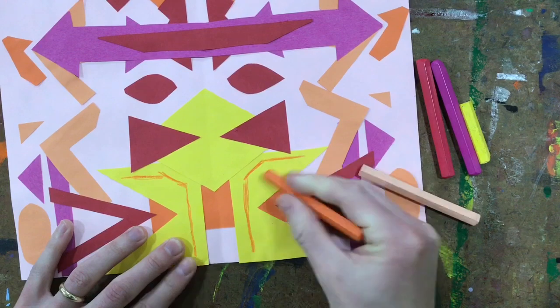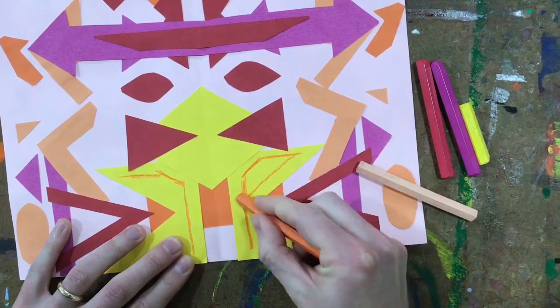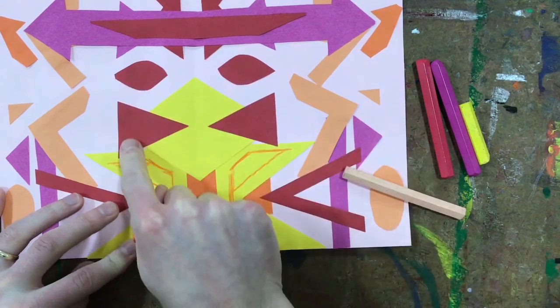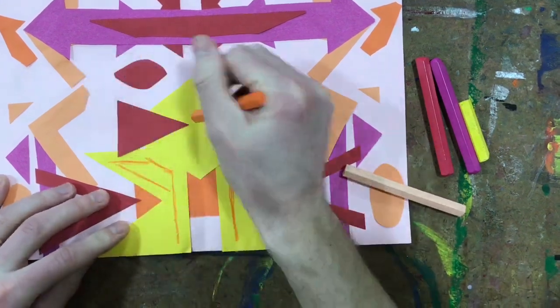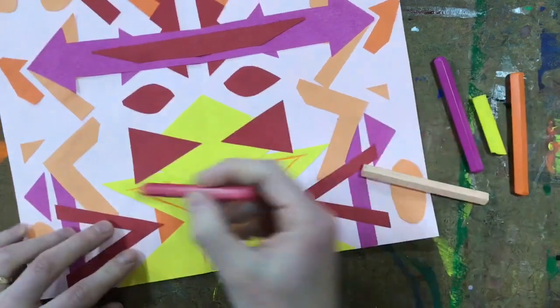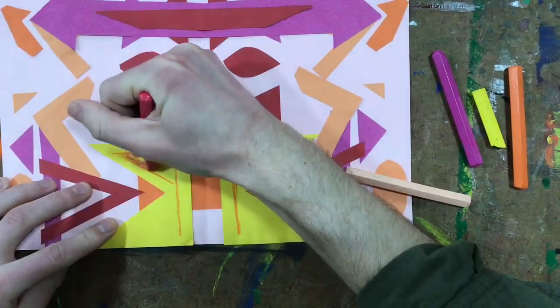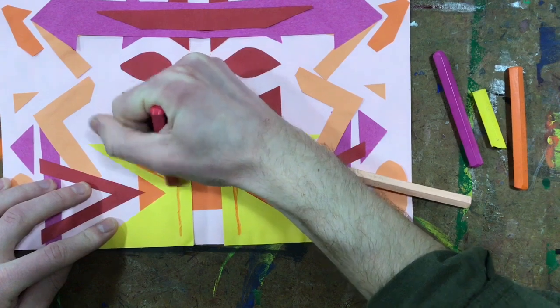I'm not just going to color in a whole shape though. So if my triangle right here is red, it doesn't make sense to color that whole thing orange, because it's already a red shape.